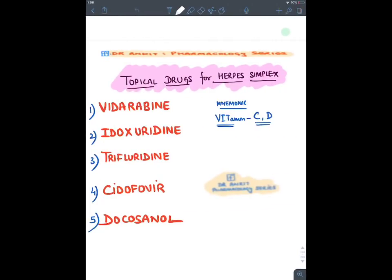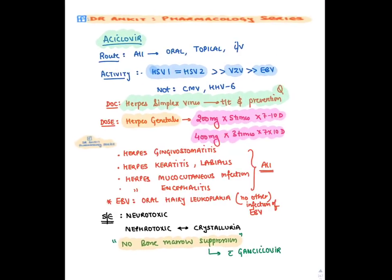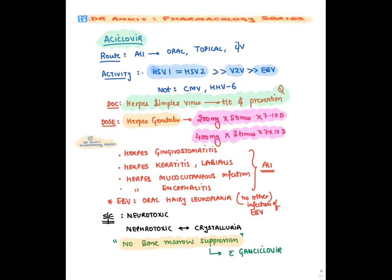Certain topical drugs for Herpes Simplex Virus — the mnemonic is VITCD: Vidarabine, Idoxuridine, Trifluridine, Cidofovir, and Docosanol. Idoxuridine, Vidarabine, and Trifluridine are never given systemically because they are highly toxic. Idoxuridine is highly cardiotoxic, so it is only given topically for Herpes labialis and Herpes keratitis (infections of the lips and cornea).